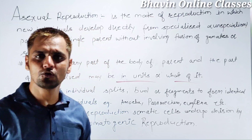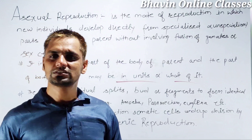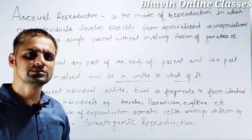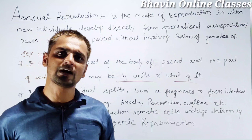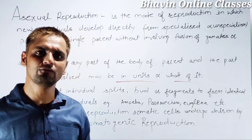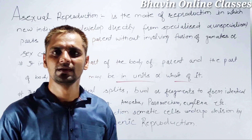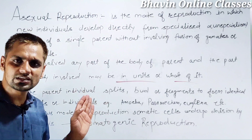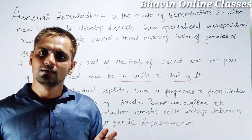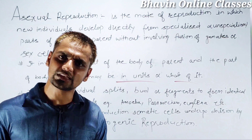Asexual reproduction is the mode of reproduction in which an individual develops directly from a specialized part or unspecialized part of a single parent without involving fusion of gametes. No fusion occurs. It involves any part of the body of the parent.